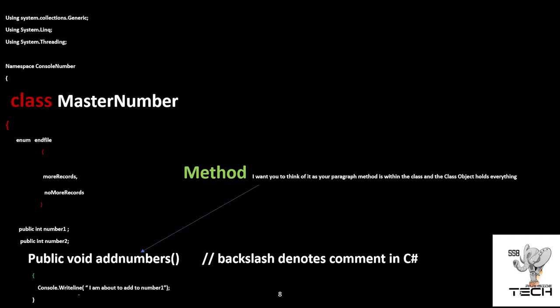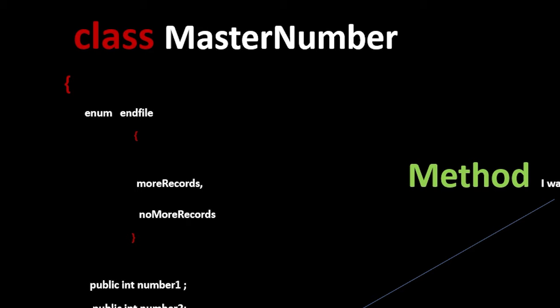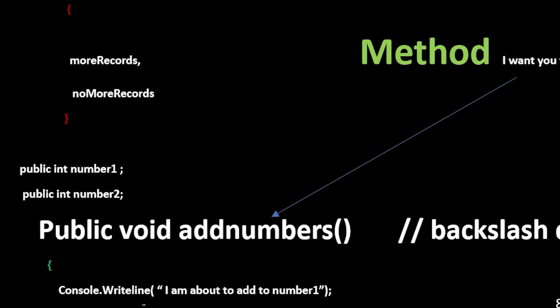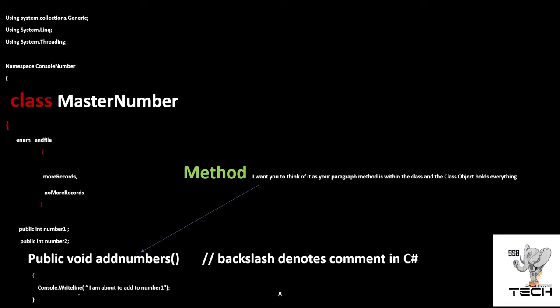Here's an example of that same code — where I had numbers as an 01 and no more records as an 88 level. That 88 turns into an enum, and I can still put 'more records' and 'no more records' and interrogate the enum to ask if there are more records or no more records. That number, which was an 01 field, I now have as a public int. We still have slashes to denote comments in C#.